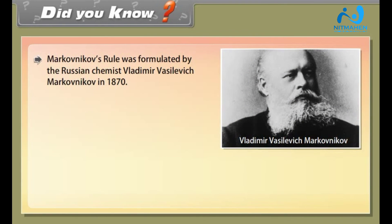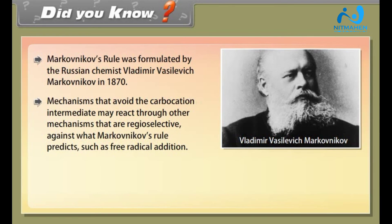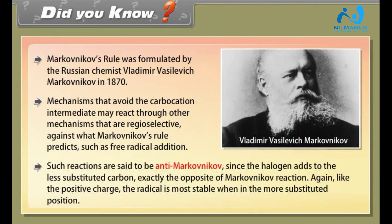Did you know? Markonikov's rule was formulated by the Russian chemist Vladimir Vasilevich Markonikov in 1870. Mechanisms that avoid the carbocation intermediate may react through other mechanisms that are regioselective against what Markonikov's rule predicts, such as free radical addition. Such reactions are said to be anti-Markonikov, since the halogen adds to the less substituted carbon, exactly the opposite of Markonikov's reaction. Again, like the positive charge, the radical is most stable when in the more substituted position.